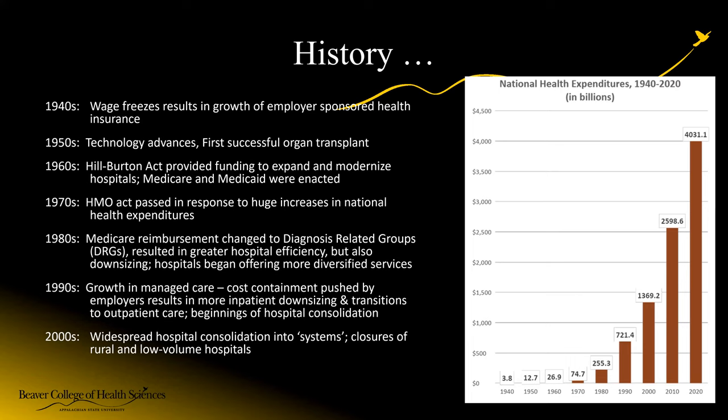In the 1990s, we see managed care — HMOs, PPOs — that model of tightly controlling utilization and requiring prior authorization grows, and hospitals shrink a little and right-size. Then in the 2000s, we see widespread consolidation as hospitals and health systems work to pool their bargaining power to work with insurance companies. And you can see that during this time, expenses are going up from a national health expenditure perspective.